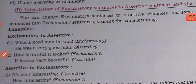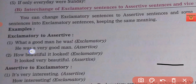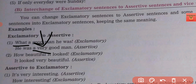It is very important that you keep the meaning the same when converting. For example: 'What a good man he was!' — this is exclamatory. To make it assertive: 'He was a very good man.' We have to use the word 'very' because we saw something exciting and unique, and we need to show that he is strongly expressed as extraordinary.